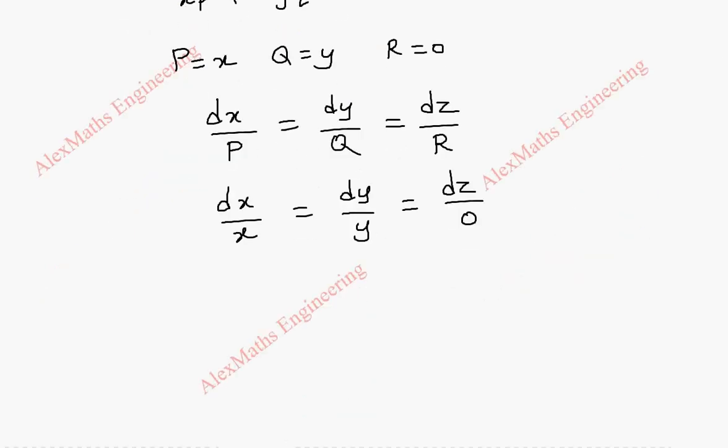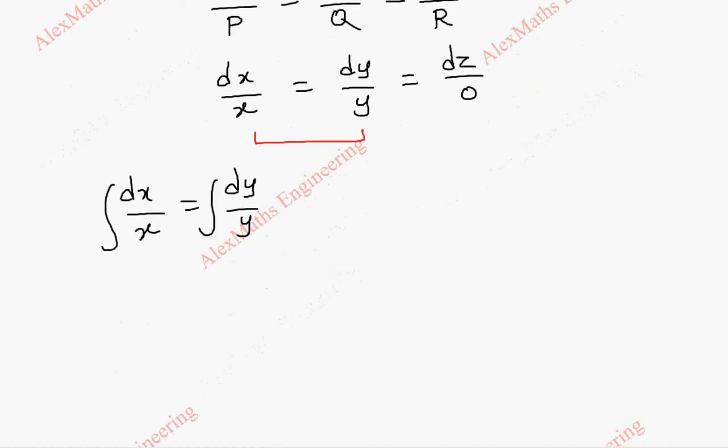Now, taking two terms at a time, let's take these two first. We are going to take dx by x equal to dy by y on integration on both the sides. So this becomes log x equal to log y plus log c1.